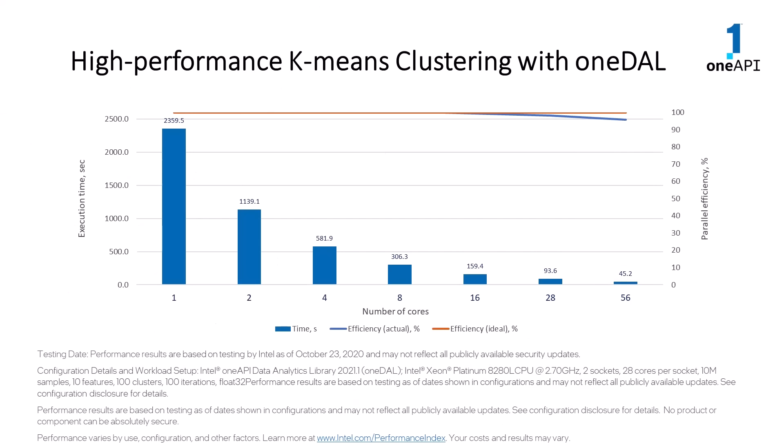As shown on the screen, the library's optimized version of the k-means clustering algorithm achieves significant reduction in execution time and nearly ideal efficiency with increasing number of cores on an Intel CPU.